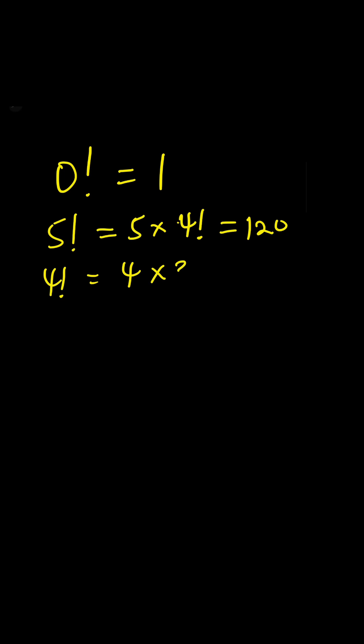Four factorial is equal to four times three factorial, which is equal to 24. Now three factorial is three times two factorial, which is equal to six. And then two factorial is equal to two times one factorial, which is equal to two.